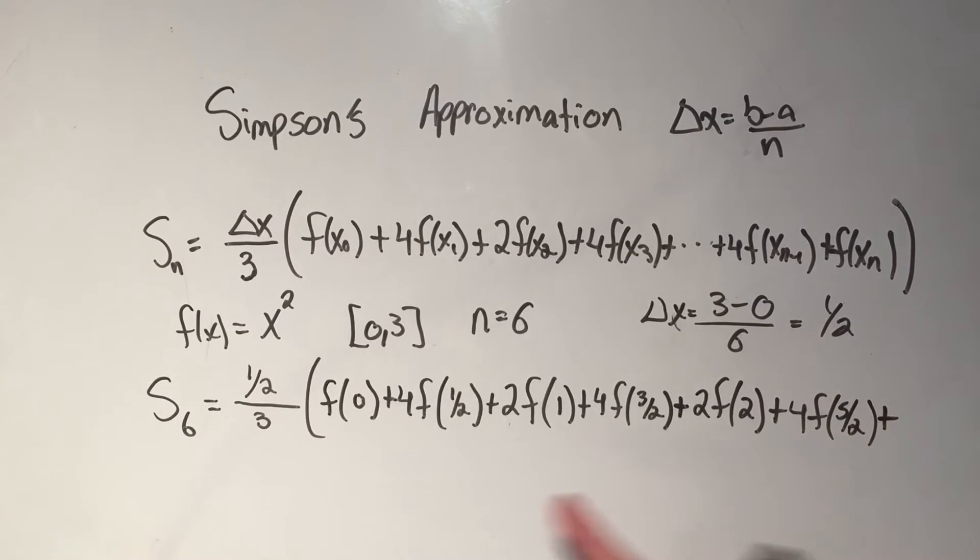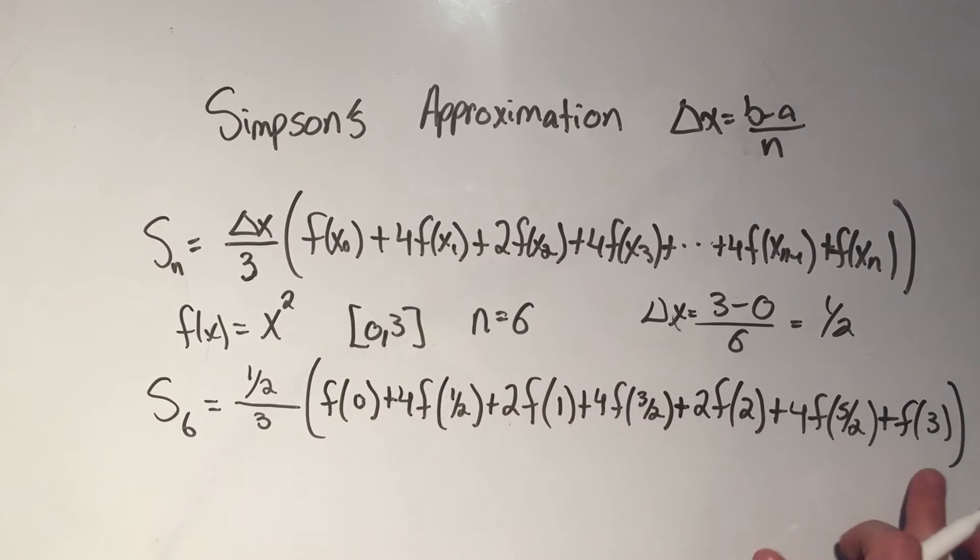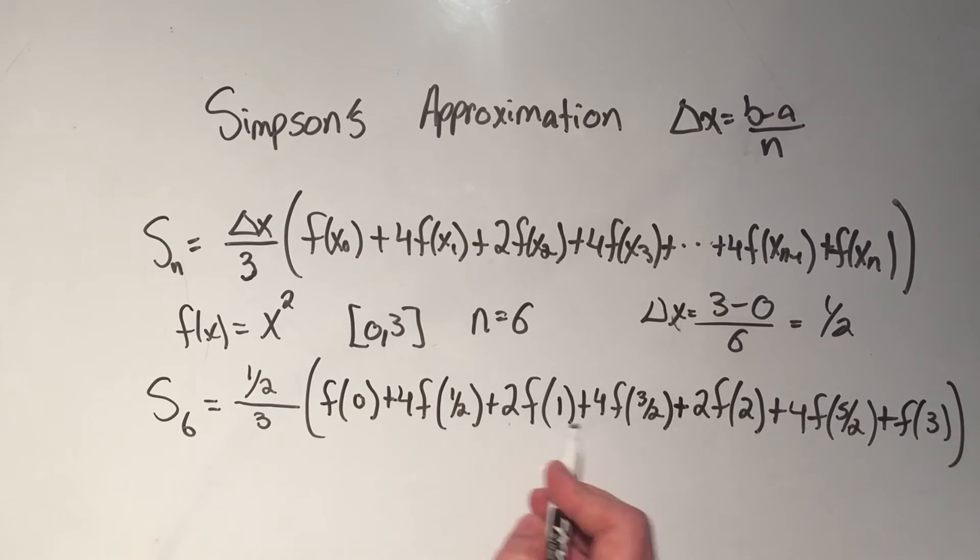f of 2 plus 1 half is 5 halves. And now, I've got 1, 2, 3, 4, 5, 6. I need 1 more. So this is going to be my last one, because if I add a half, I'd be at 6 halves, or 3. And my very last one does not get any coefficient other than 1. My first and last points only have 1, and everything in the middle goes from 4 to 2, back and forth.